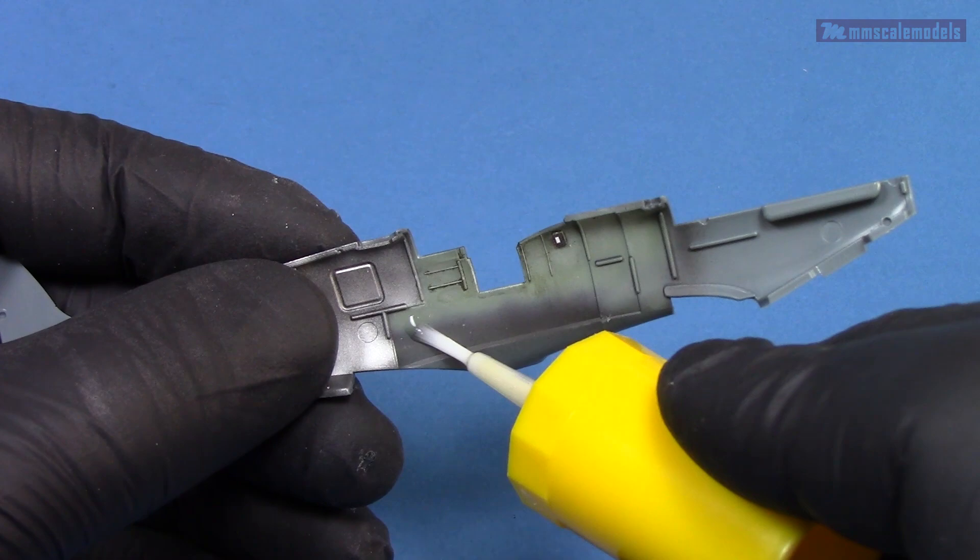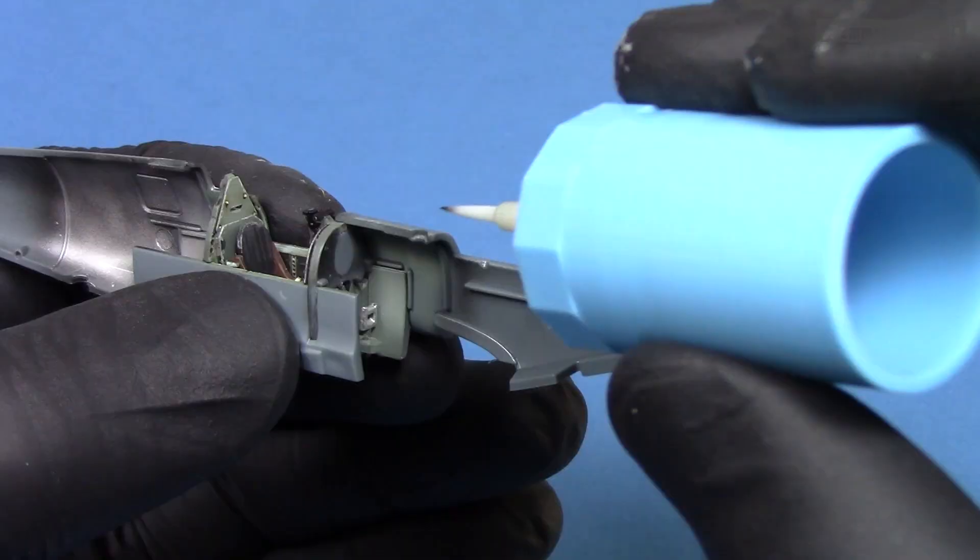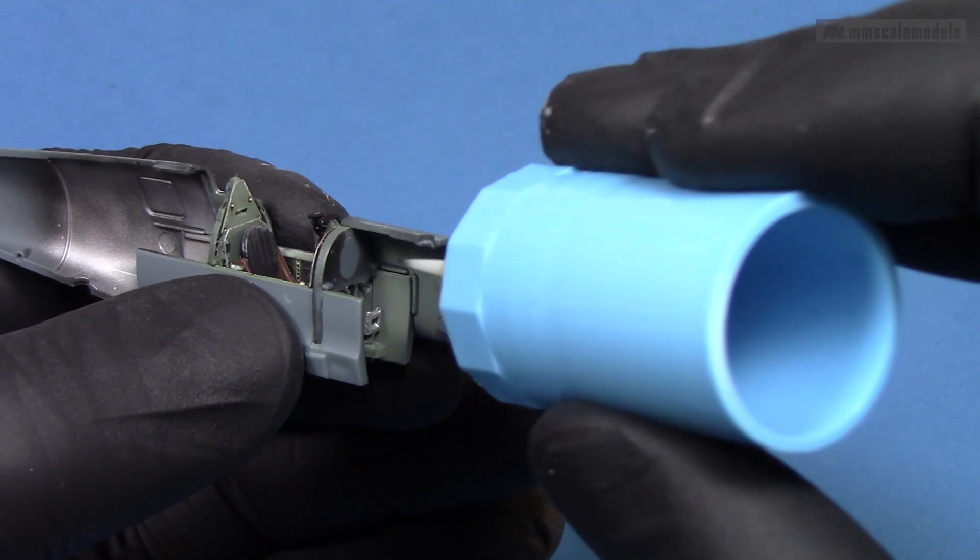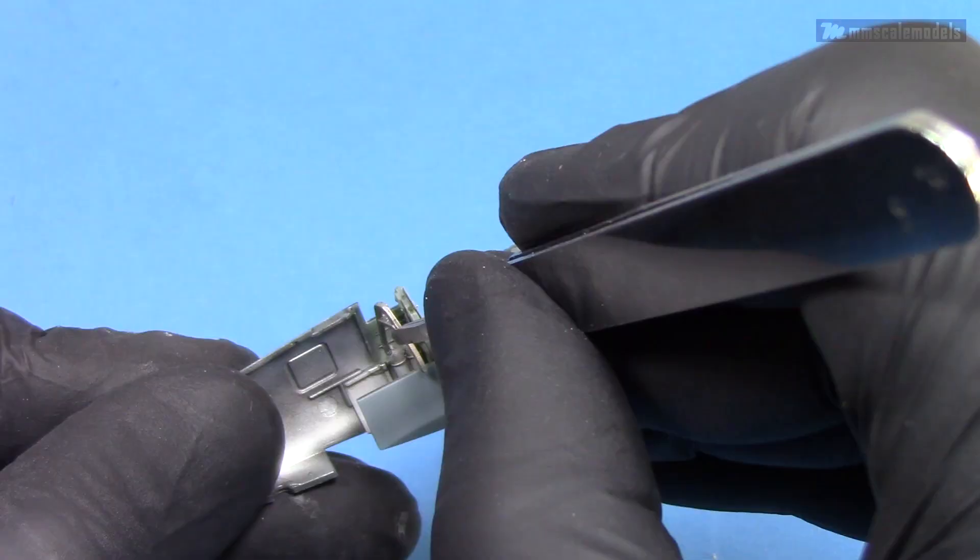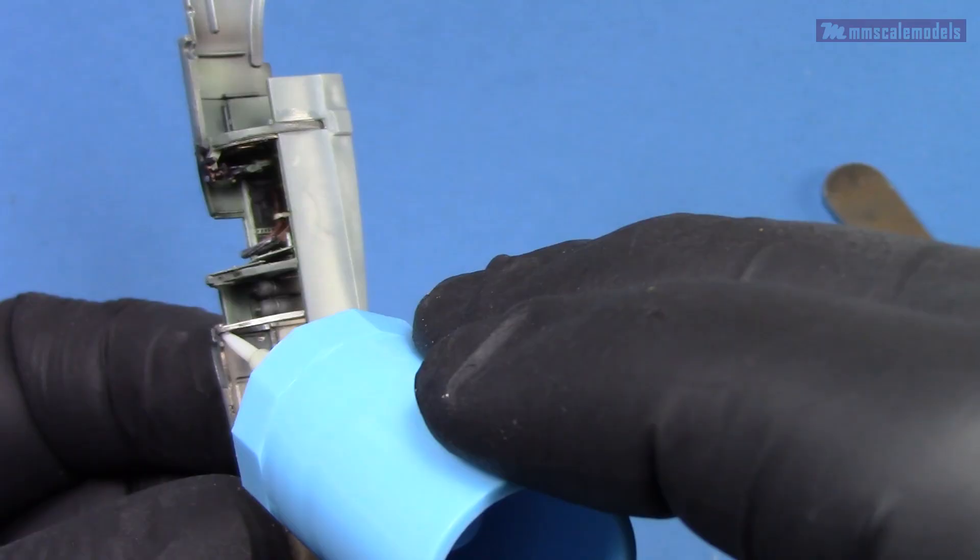Here I should have masked the contact area before painting for better adhesion. Not doing so did not cause any issues this time but it is good practice and it is worth doing. As previously I used slower cement for the initial positioning and then Mr. Cement test to reinforce the joint.